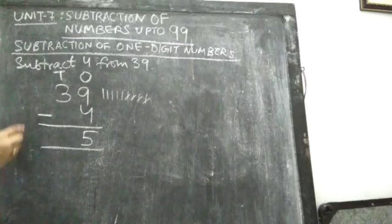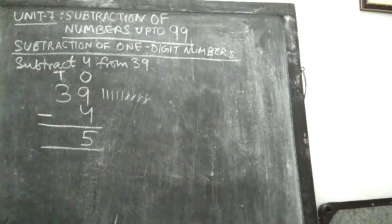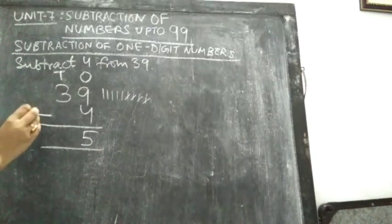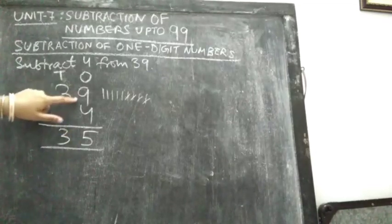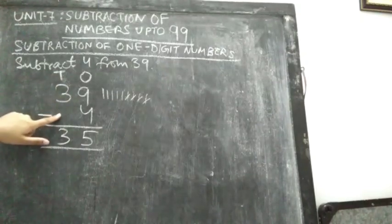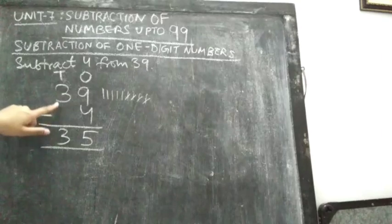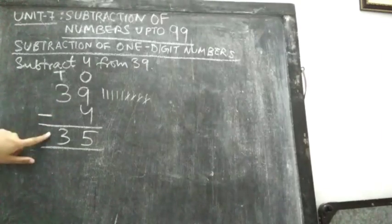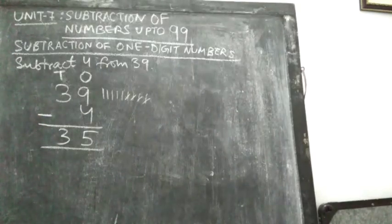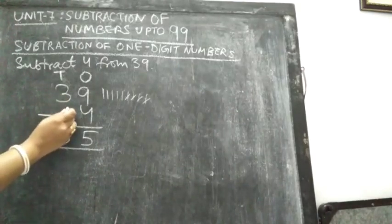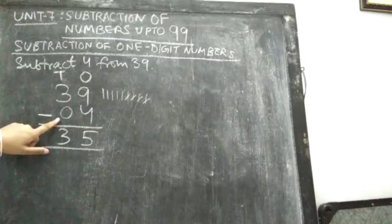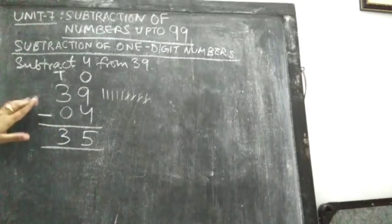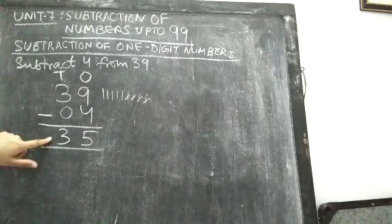Now we will subtract the 10s column. We can see only one number is there. So simply we have to copy and paste, because it is written in the first part — in the second part, nothing is there. So we will simply write 3. Nothing is there, it means 0. As we know, 0 has no value. 3 minus 0 — simply copy and paste. Write this number only.